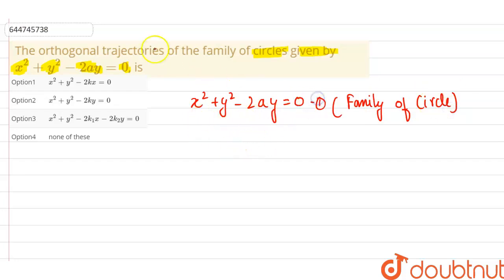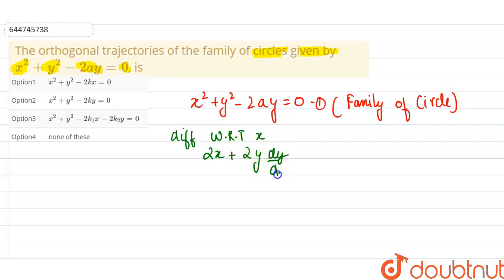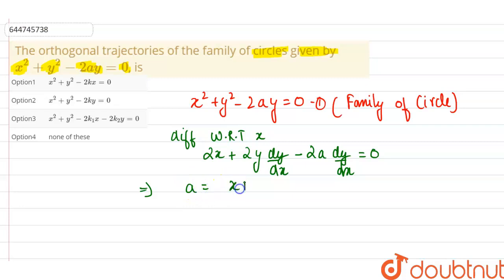We have to differentiate this equation with respect to x. Differentiation of x² is 2x, plus differentiation of y² is 2y dy/dx, minus differentiation of 2ay is 2a dy/dx, equal to 0. From this we can easily find the value of a: a = (x + y·dy/dx) / (dy/dx).